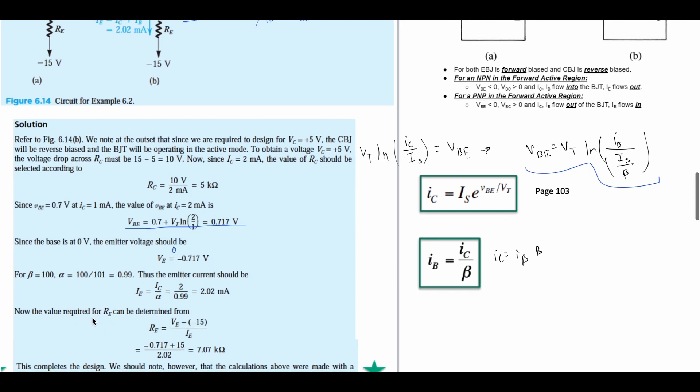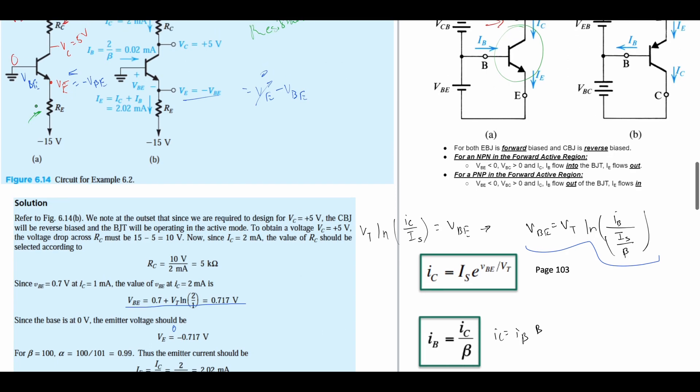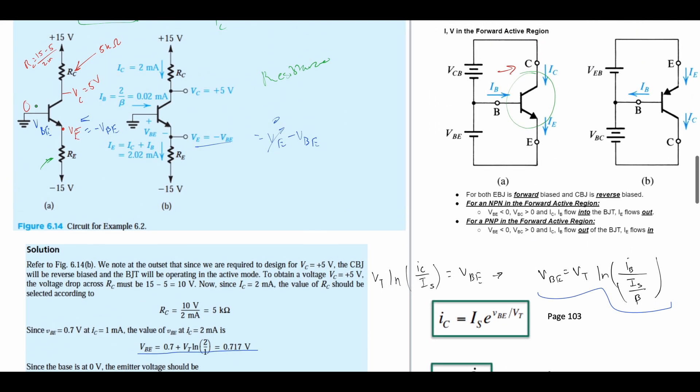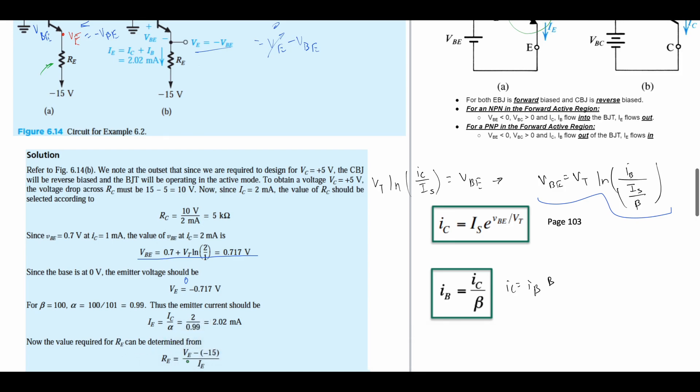Now the value required for RE can be determined because we want to find the resistor. That's what we were talking about earlier. This resistor, like we've looked at previously with RC, is going to be the source voltage. We can see that we have our voltage VE right here.